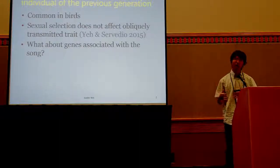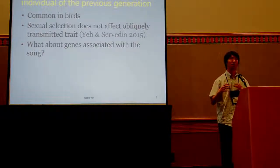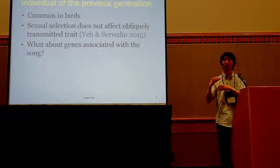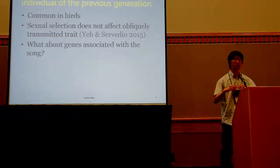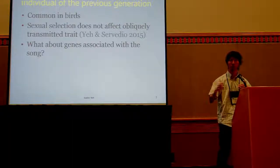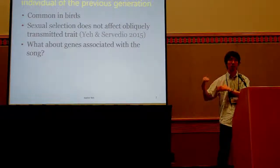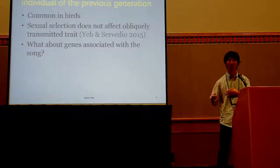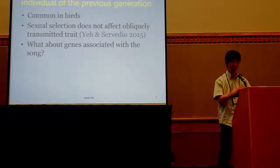At least from what I've heard from empiricists, most songs in songbirds are learned obliquely, meaning they are learned from unrelated individuals of the previous generation. Most of the time it's a juvenile in the nest hearing the adult neighbor's song and then learning that song. On top of learning the song, they can also learn to prefer that song, so that later when they choose their mate, they may choose a mate that sings the song they listened to when they were little.